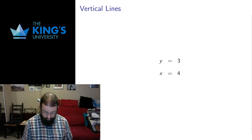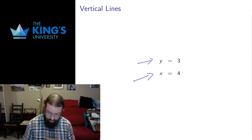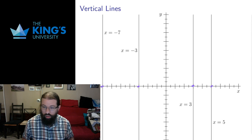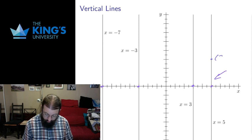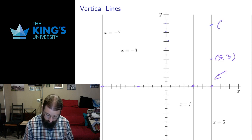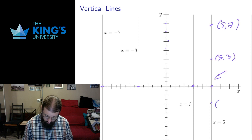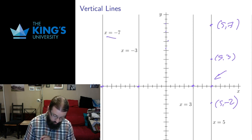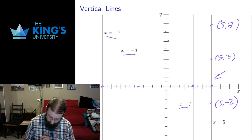What about a vertical line? If horizontal lines are given by y equals a constant, then vertical lines should be given by x equals a constant. In a vertical line the x coordinate is fixed — it never changes — and the y coordinate can be anything. So the line x = 5 contains all points with x coordinate 5: (5, 3), (5, 7), (5, −2), and so on. The y coordinate changes but x never does. So vertical lines are given by x equals a constant, for example x = −7, x = −3, x = 3, or x = 5.